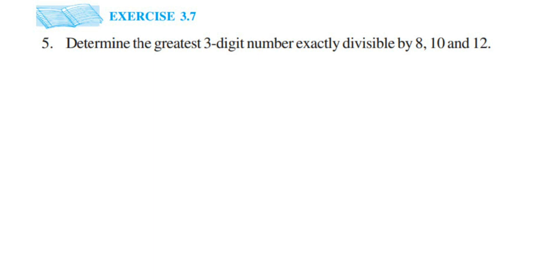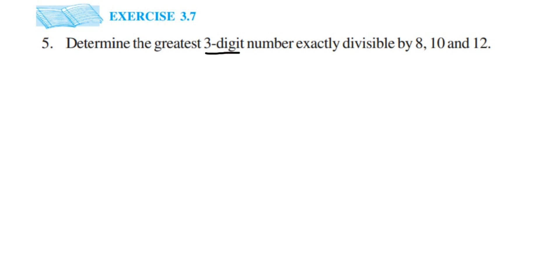Here's a question from Exercise 3.7, fifth question. The chapter is 'Playing with Numbers.' The question is: determine the greatest three-digit number exactly divisible by 8, 10, and 12. We need to find the greatest three-digit number which is exactly divisible — meaning we can divide that number by 8, 10, and 12. To do this, we have to find the Least Common Multiple of 8, 10, and 12.